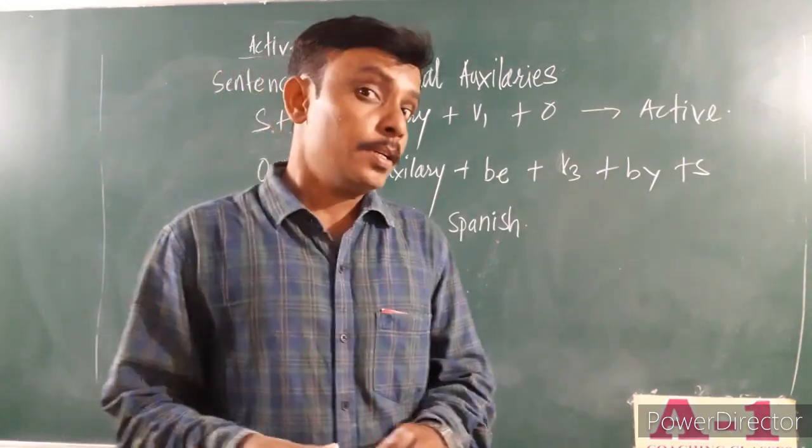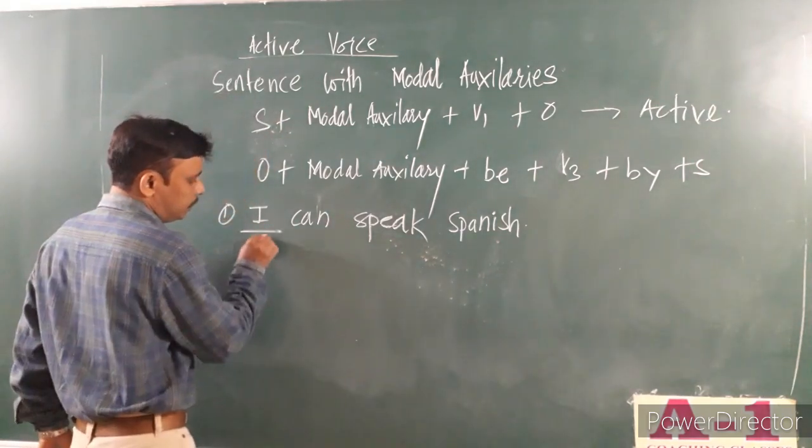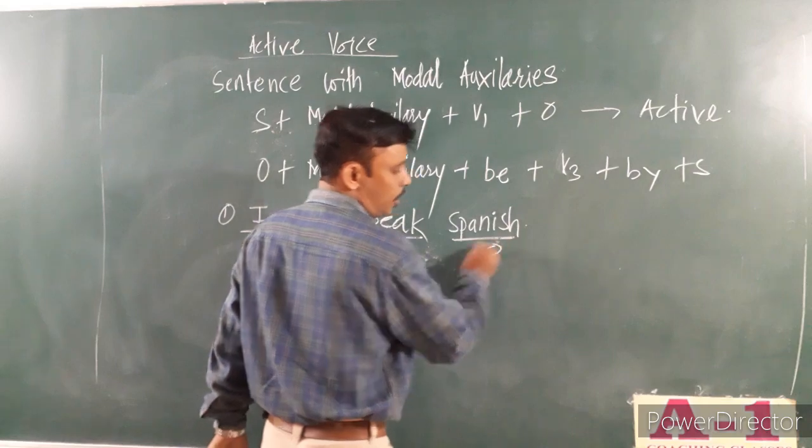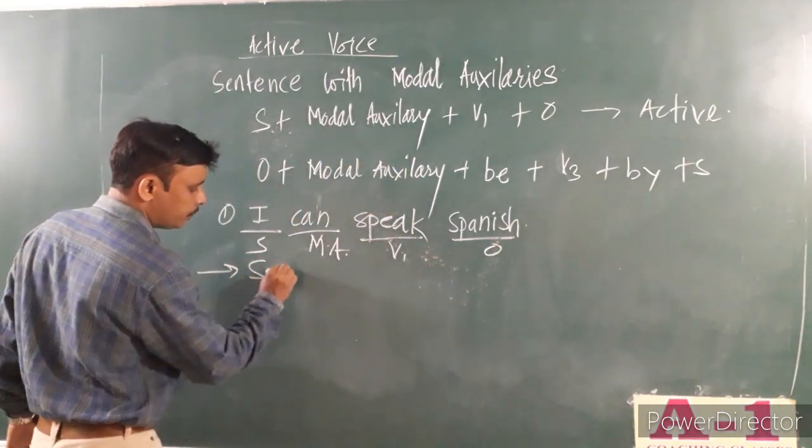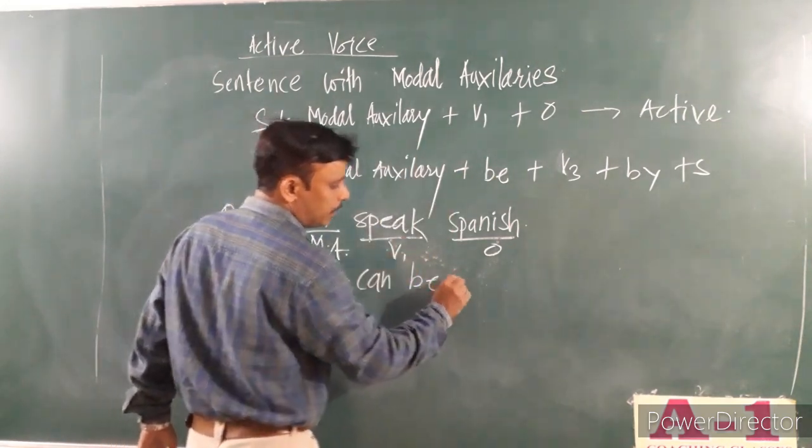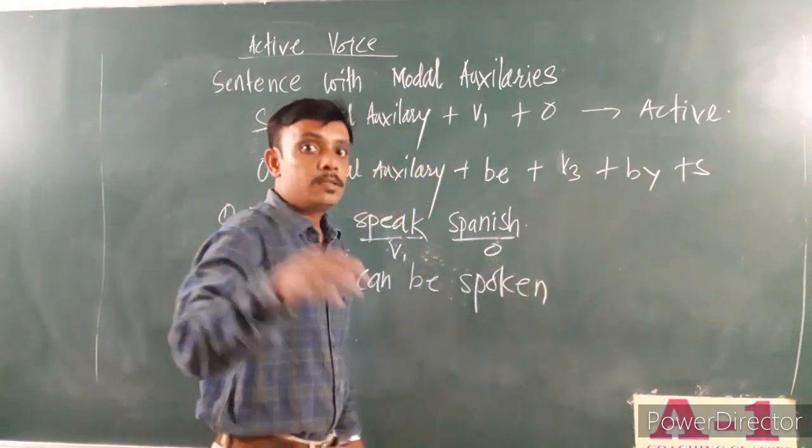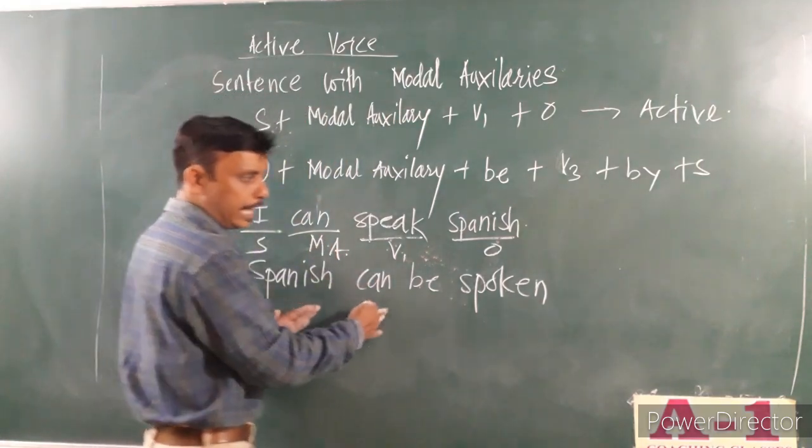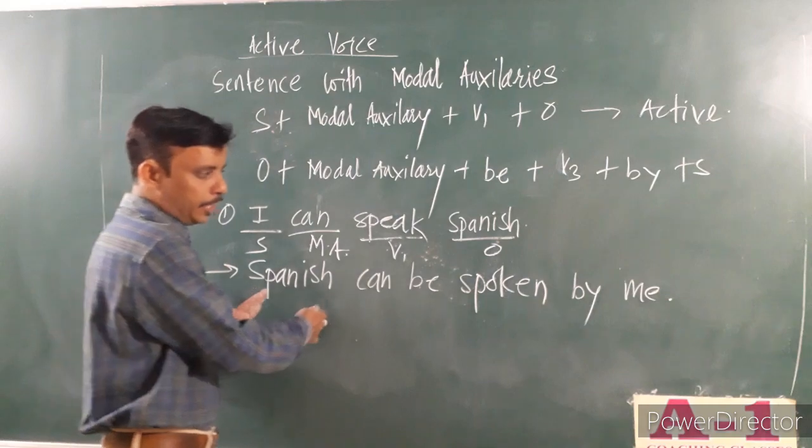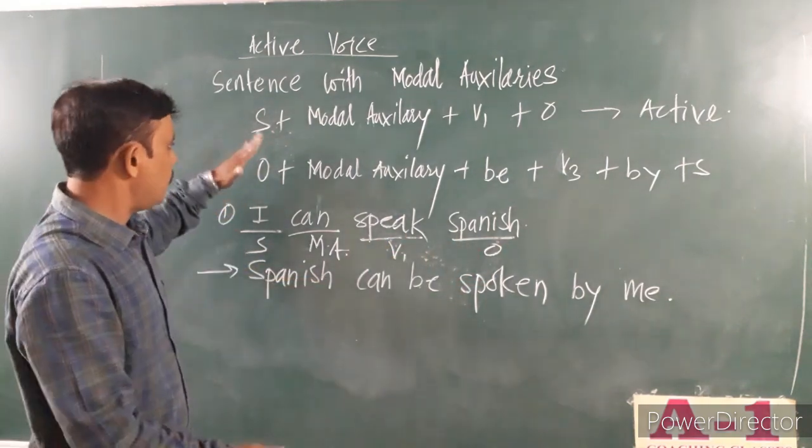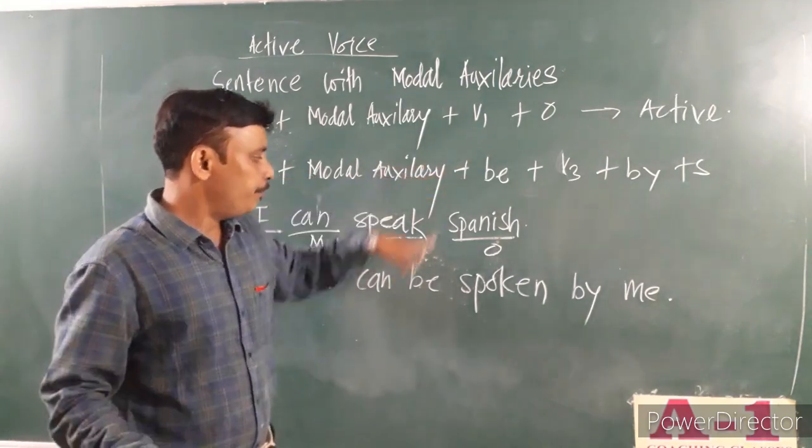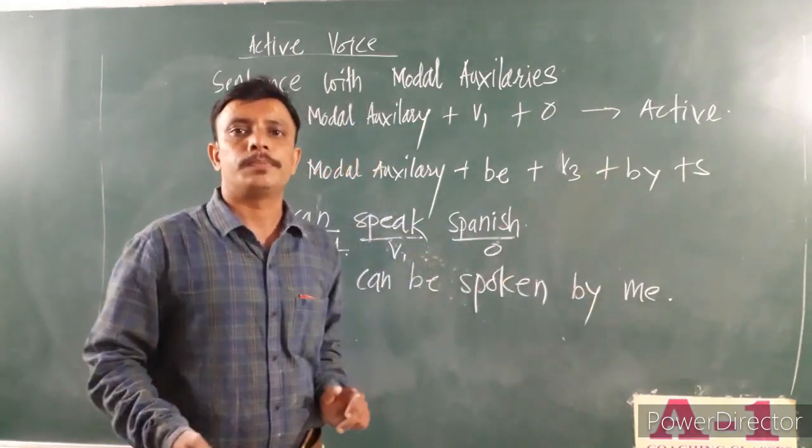Example: I can speak Spanish. Let's bifurcate the parts. Subject is I, modal auxiliary is can, speak is V1, object is Spanish. Now the passive: Spanish can be spoken - speak becomes spoken, third form - by me. Spanish can be spoken by me. This is how you have to cross-examine, cross-check whether the structure is being followed. Object, modal auxiliary as it is, be as it is, V3 form, by subject, and so on.